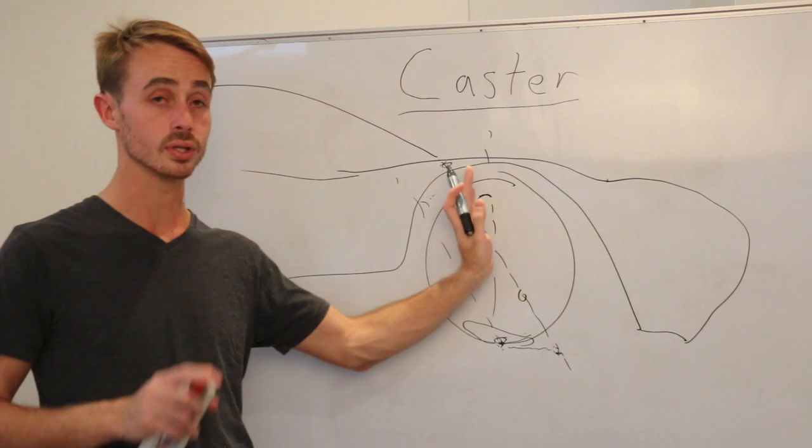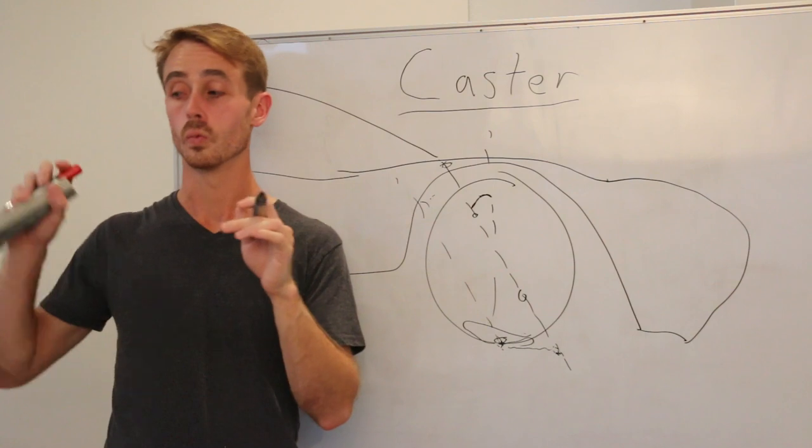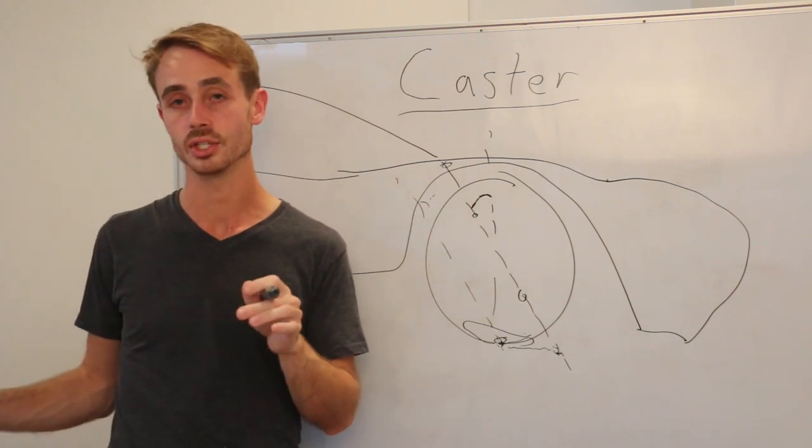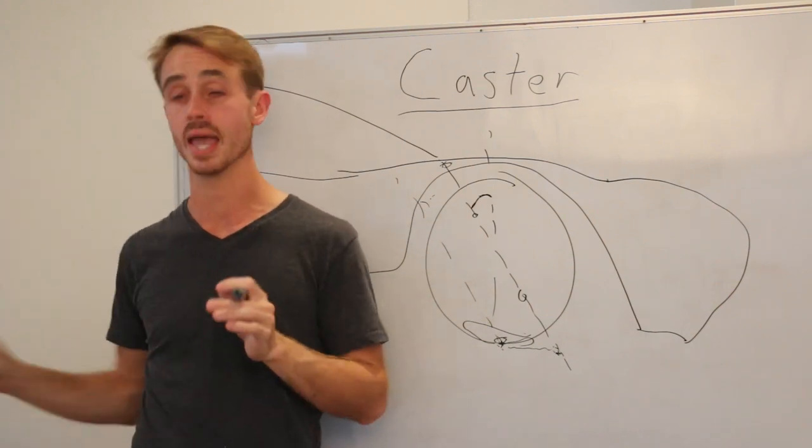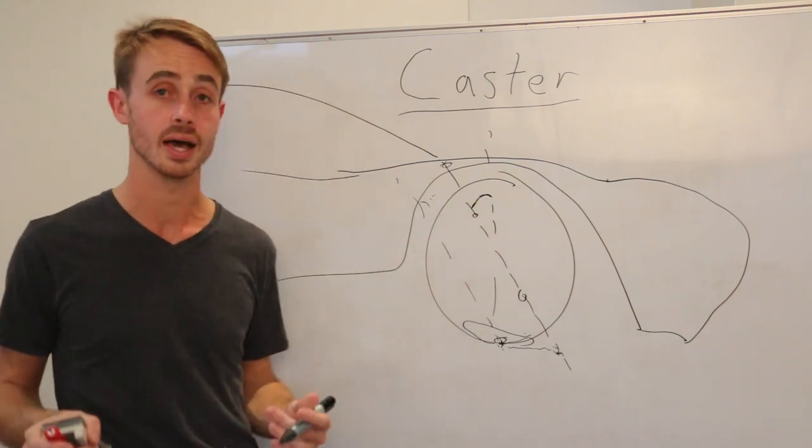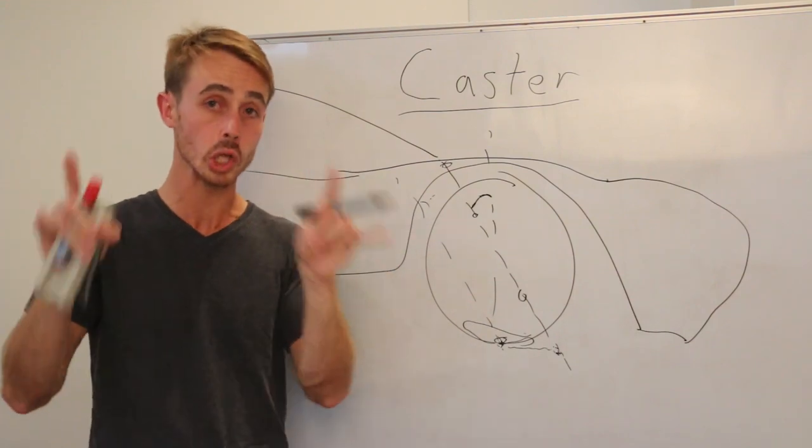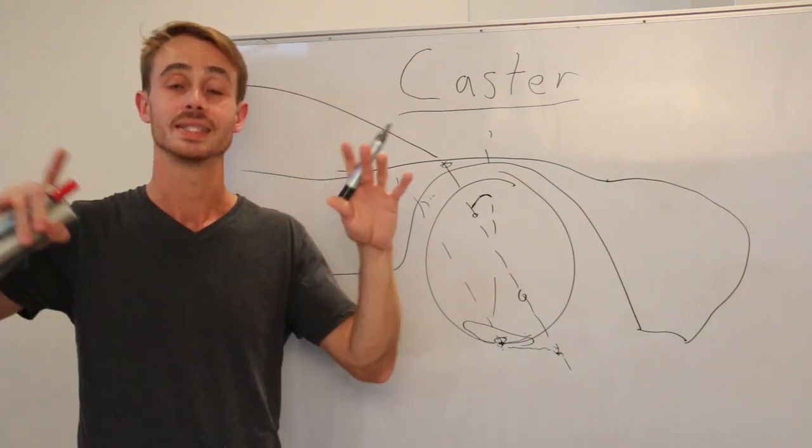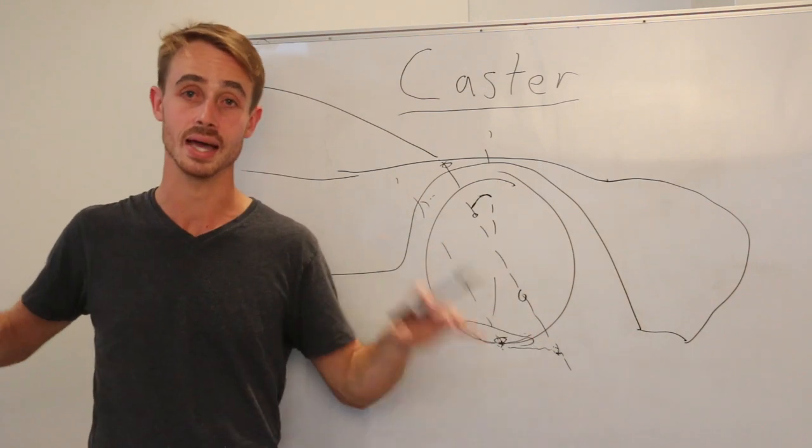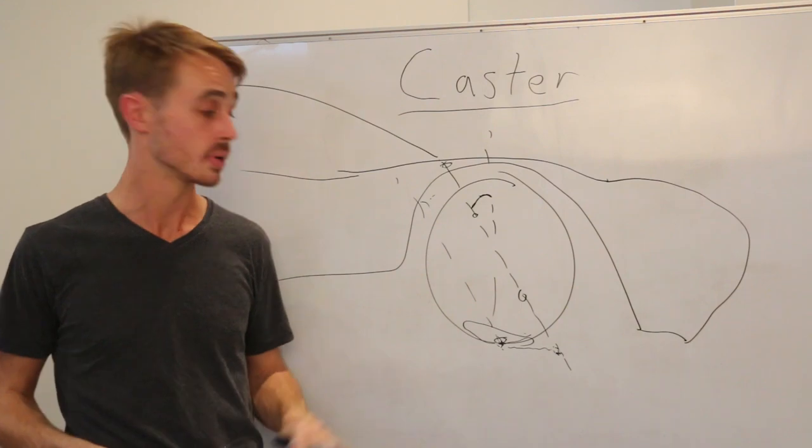It's important that you consider these two things in parallel because what works for one set of caster with one set of kingpin inclination angle will not work if you change the kingpin inclination angle. Now, that's one of the things with off-road cars is they have to run quite a lot of caster because they need a lot of kingpin inclination angle to get over the fact that packaging their tires is really hard and they're going to have very bad scrub radii if it's not all mated up.